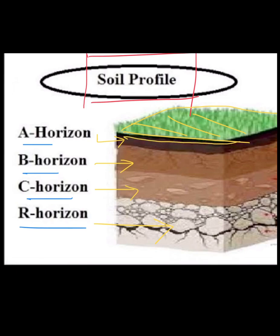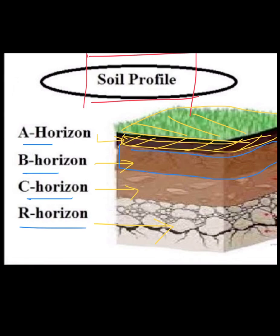The dark layer at the top we call topsoil. It is dark in color due to dead animals, decomposition, decay, and humus formation. This topsoil layer is followed by the sub-soil layer just below it.